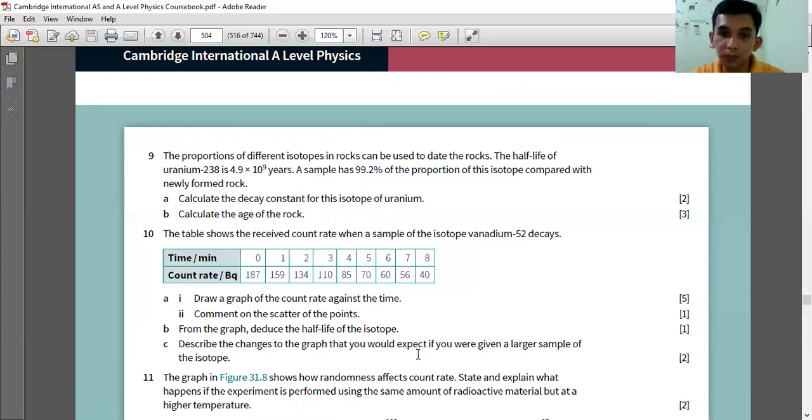And describe the changes to the graph that you would expect if you were given a larger sample of the isotope. So what will happen if they give us a larger sample of the isotope? It means the count rate is way bigger than this. What will happen to the graph?